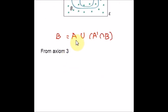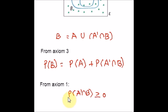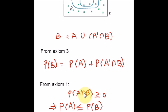From axiom 3, we write the probability of A plus the probability of A complement intersection B equals P(B). By axiom 1, the probability of any event is greater than or equal to 0. Applying this to P(A' ∩ B) ≥ 0, it follows that P(A) ≤ P(B). Hence we have proved property number 1.